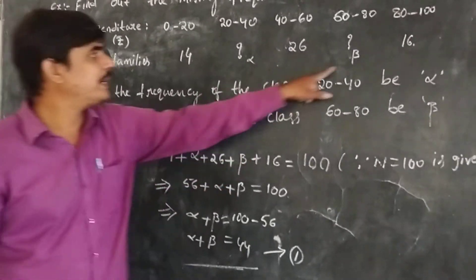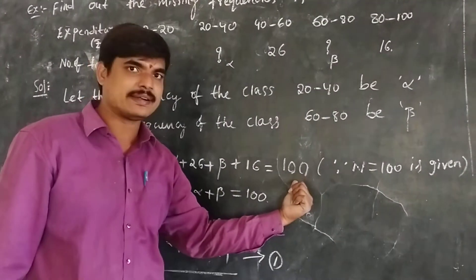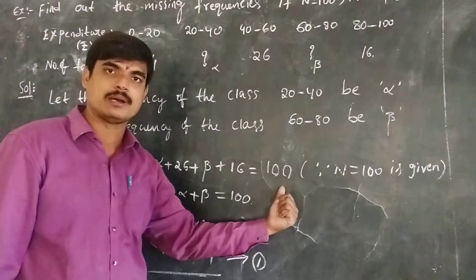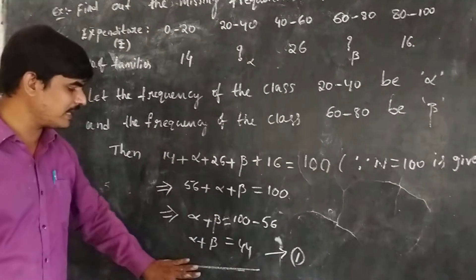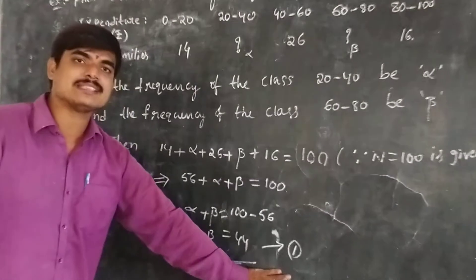Summing all those values equals 100, the total N. If we simplify this, we get the relation alpha plus beta equals 44. We make this equation one.